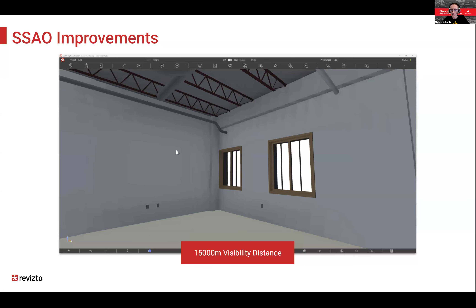When set to 15 kilometers instead of 1 kilometer, you can see the ambient occlusion becomes a bit jagged. For buildings or smaller commercial spaces, you can bring that camera visibility distance right down. For infrastructure projects, you're probably not going to worry much about ambient occlusion anyway.